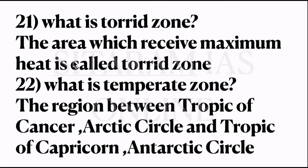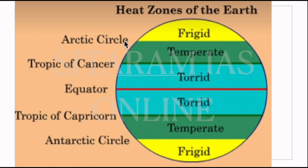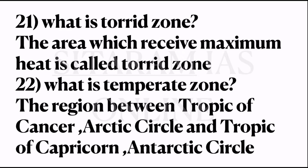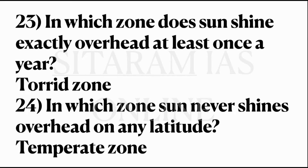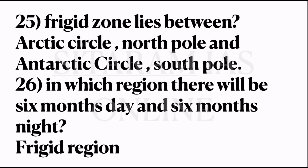21st question: what is the torrid zone? The areas which receive maximum heat are called torrid zones. 22nd question: what are temperate zones? Temperate zones are the regions between Tropic of Cancer and Arctic Circle, and Tropic of Capricorn and Antarctic Circle. 23rd question: in which zone does the sun shine exactly overhead at least once a year? It is the torrid zone. 24th question: in which zone does the sun never shine overhead on any latitude? It is the temperate zone.